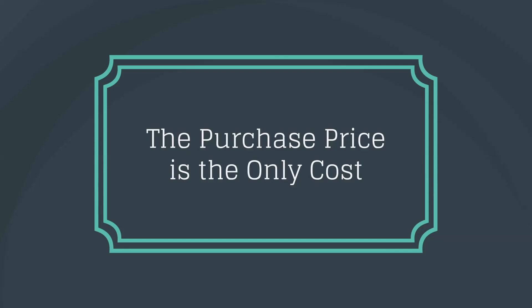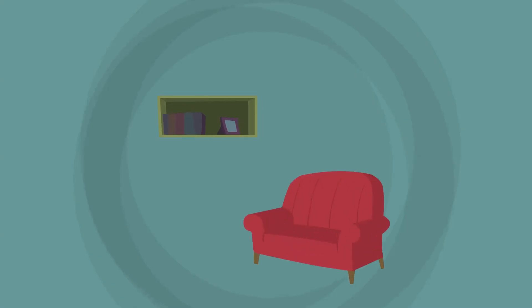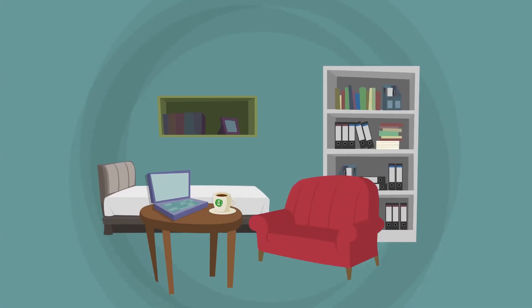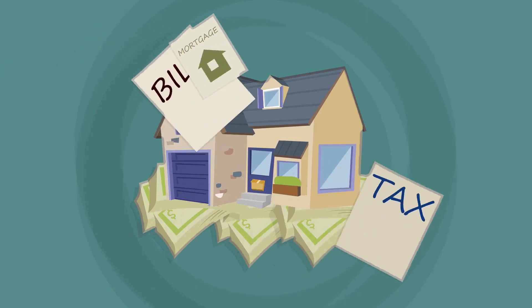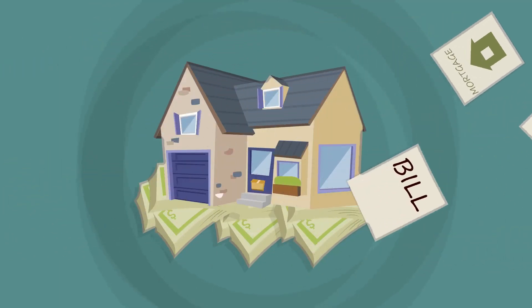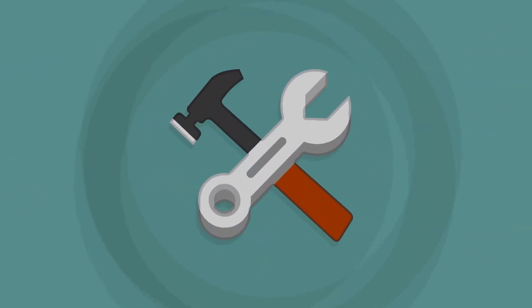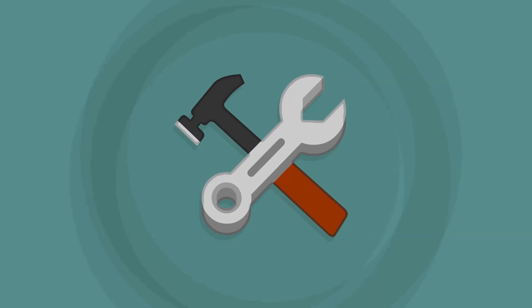The purchase price is the only cost. The cost of homeownership is more than just the sales price. Buyers and sellers should be prepared for closing costs and other expenses of buying and selling a house. For the buyer, there will also be new furnishings, homeowner association fees, insurance, taxes, improvements, and repairs.